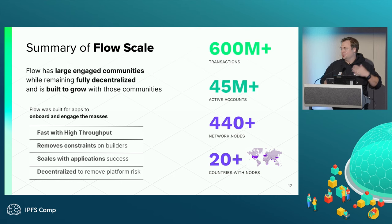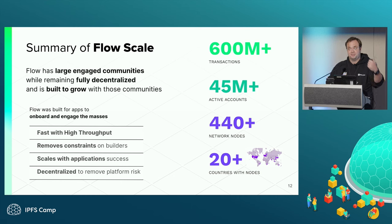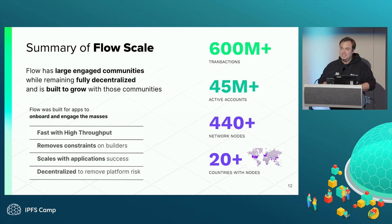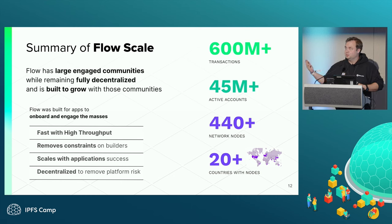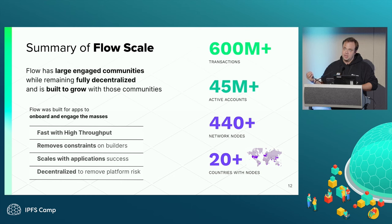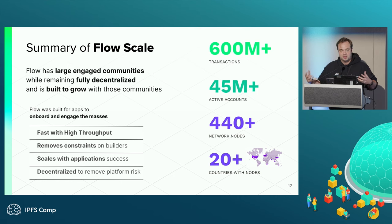Flow wants to engage large communities while remaining fully decentralized, built to grow with the success of those communities. We don't want to lose Web3 principles — interoperability, composability, and decentralization — but we need to handle the throughput of large communities, removing constraints from builders and scaling applications with their success without requiring them to build an L2 or L3. Flow today has processed roughly 600 million transactions, has 45 million active accounts, 440 nodes running across 20 countries, and is working on further regional decentralization.